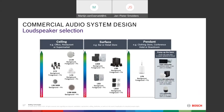Looking at loudspeaker types, we have ceiling, surface, and pendant loudspeakers. Ceiling loudspeakers are commonly used in offices, restaurants, and supermarkets. From bottom to top they go up in performance: simple ceiling speakers like the LHM or LBC 3090, then the LC6 with a subwoofer in the center for low frequencies with satellite speakers, and then the premium LC2 and LC20 with very good frequency response for excellent audio reproduction.